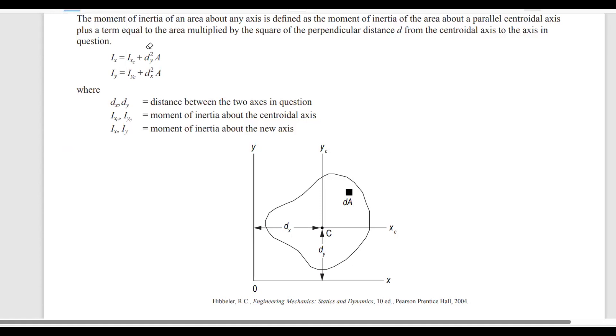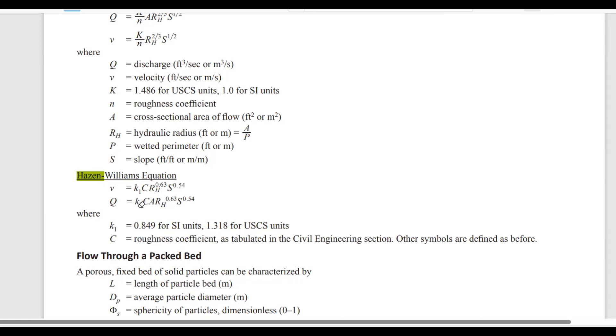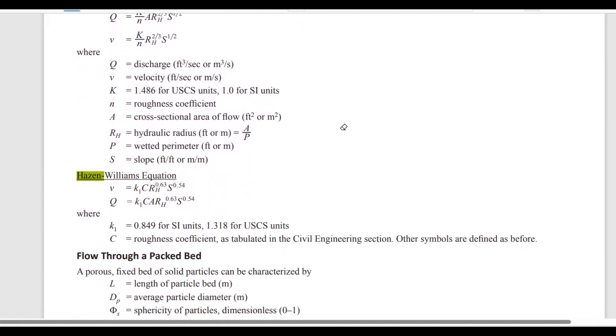The problem states right away the Hazen-Williams coefficient, so you know that you have to use the Hazen-Williams formula. We're going to go straight to the FE handbook and imagine that we are on the exam. We're going to do a search of Hazen-Williams, and I think it's written with a dash in between. There you go.